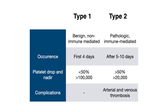Type II is the pathologic, immune-mediated type. This typically occurs five to ten days after heparin administration — and the timing is key. Because this is the more pathologic type, the platelet drop is greater than 50%, and the nadir can be quite low but will still be greater than 20,000, since a drop below 20,000 would prompt consideration of other thrombocytopenias. Type II HIT can be potentially lethal due to its complications — particularly arterial and venous thrombosis, with arterial being slightly more common. In this case, we would avoid all heparin products and typically administer direct thrombin inhibitors.